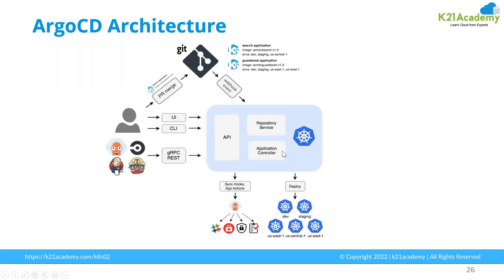Here is a high-level overview of how the Argo CD architecture works. You will have a CI/CD pipeline already built and running in your environment, and you will have a Kubernetes platform running — which can be on-premises or any managed Kubernetes running on cloud platforms.